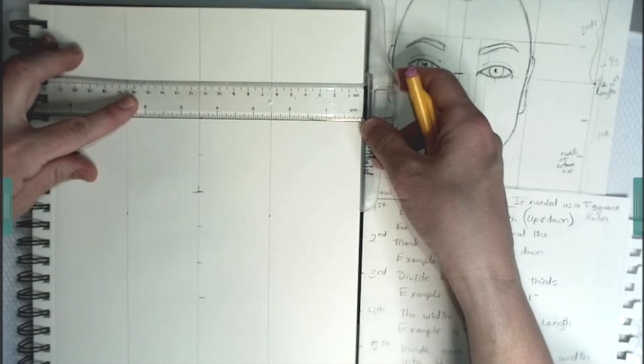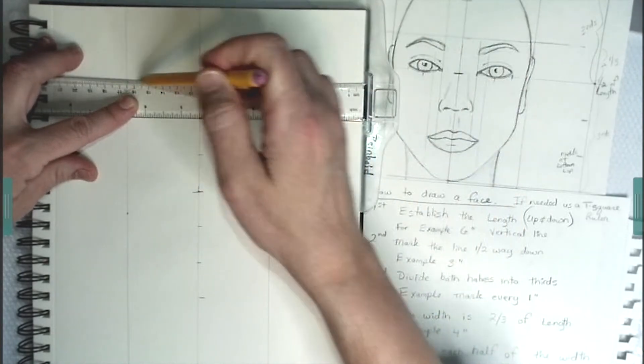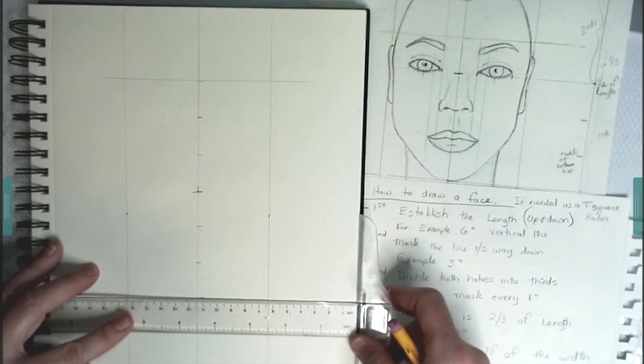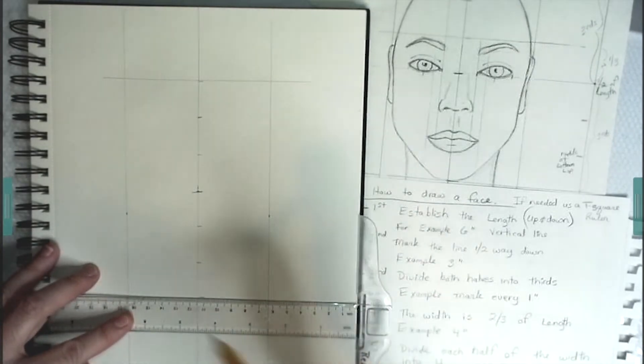Using this ruler that you see is a T-square ruler, it makes sure that everything is angled properly. Everything is squared off.